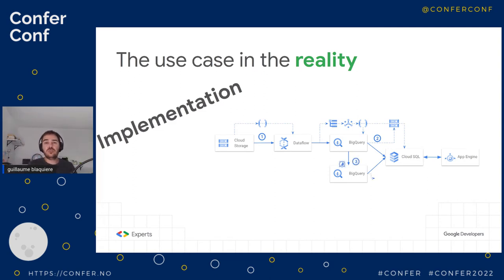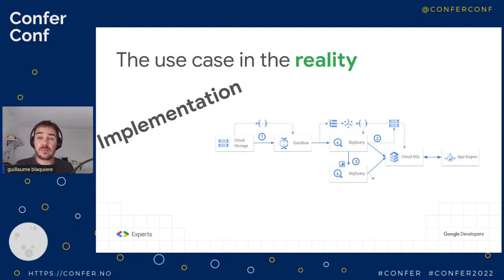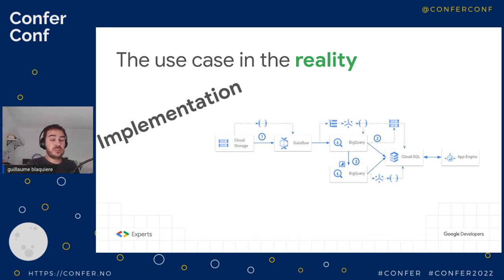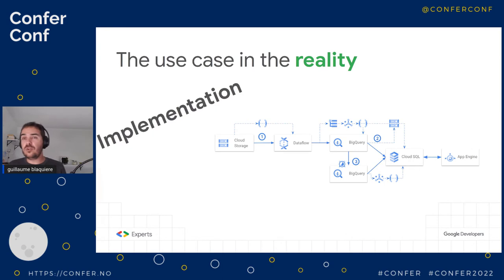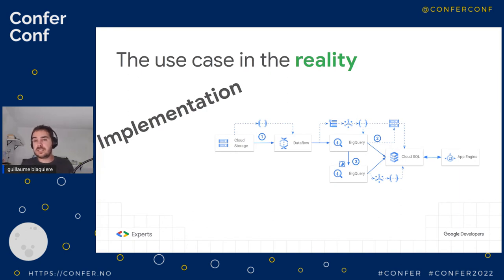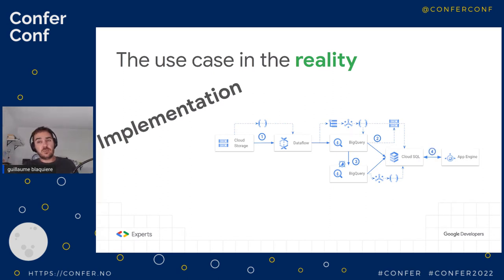Step three: we want to perform aggregations and store them in Cloud SQL. We chose to use scheduled queries in BigQuery, and at the end of the scheduled queries, a message is published in PubSub. On PubSub, we plug a Cloud Function that performs a query in BigQuery and inserts the result in Cloud SQL. Why no Cloud Storage this time? Because it's aggregation — the data volume is low, and there's no need to export to Cloud Storage and then import to Cloud SQL. It's fine to get the data in memory of the function and load it to SQL. Then we serve the data on App Engine.